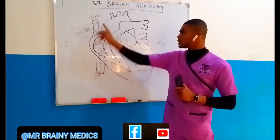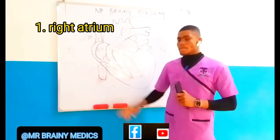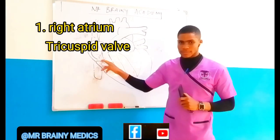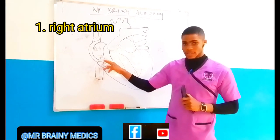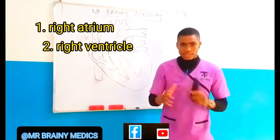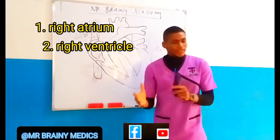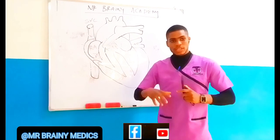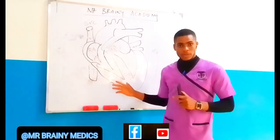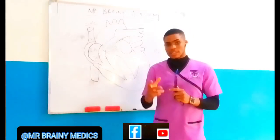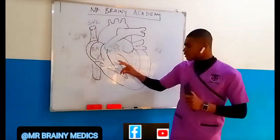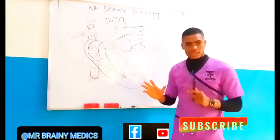So the blood flows into the right atrium, then it passes through a valve called the tricuspid valve into the right ventricle. What is a valve? It prevents the backflow of blood. It's a disease condition when the heart is not functioning very well — blood is supposed to flow forward, but if it is going back, that means the valve is having problems.